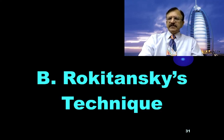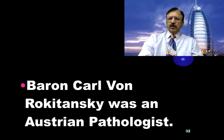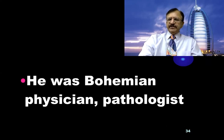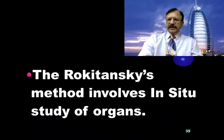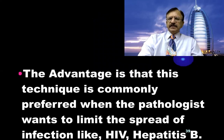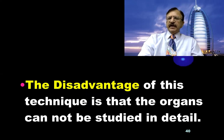Now, Rokitansky's technique. Carl von Rokitansky was an Austrian-Bohemian physician and pathologist, born in 1804 in Austria and died in 1878 in Vienna. Rokitansky's method involves in-situ study of the organs; this in-situ examination is also used in children. The advantage is that it is preferred when the pathologist wants to limit the spread of infection, such as HIV or hepatitis B. The disadvantage is that the organ cannot be studied in detail.